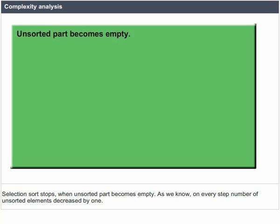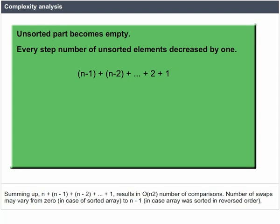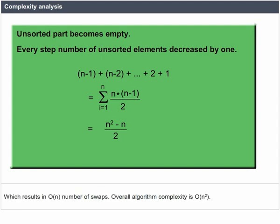Selection Sort stops when the unsorted part becomes empty. On every step, the number of unsorted elements decreases by 1. Therefore, Selection Sort makes n steps of the outer loop. Every step requires finding the minimum in the unsorted part. Summing up, n + (n-1) + (n-2) + ... + 1 results in O(n²) comparisons. The number of swaps may vary from 0 (sorted array) to n-1 (reverse-sorted array), resulting in O(n) swaps. Overall algorithm complexity is O(n²).